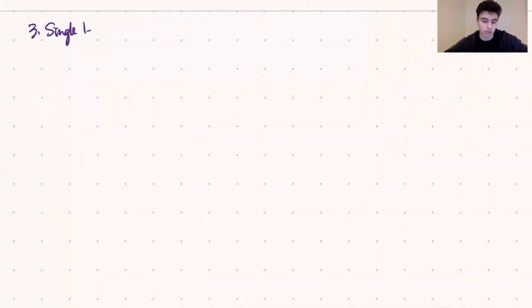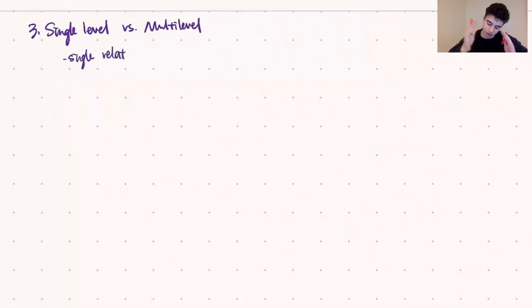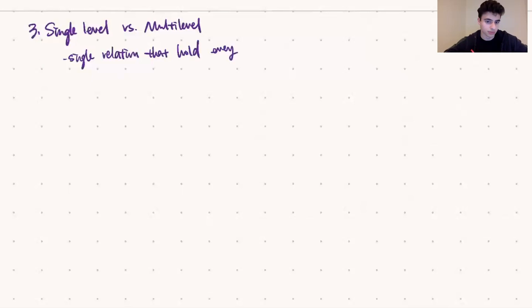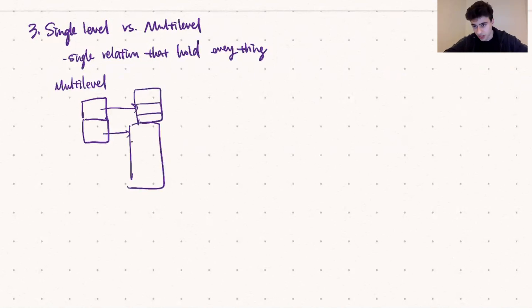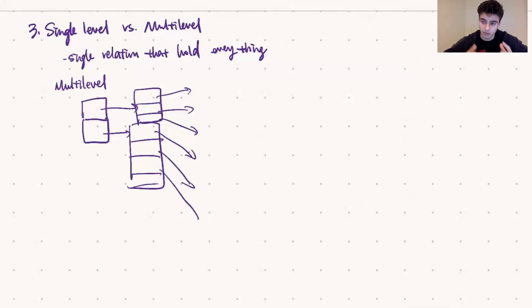The last thing to look at is single level versus multi-level indexes. A single level index is a single relation that holds all key-disk address pairs — essentially all the examples we've given so far. In reality, you're usually going to use a multi-level index, which you can think of as multiple relations that point to each other and finally to the table we're working on — essentially indexes on your indexes. This makes searching much faster because indexes can get pretty large, and this way you keep them efficient no matter the size.